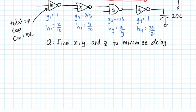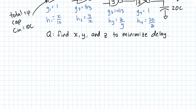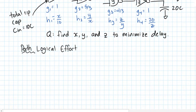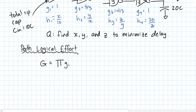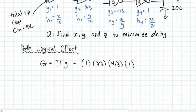To solve this problem we introduce two concepts. First, path logical effort, uppercase G — the total logical effort of the path — is defined as the product of all individual gate logical efforts. We have: 1 × (5/3) × (4/3) × 1, so the path logical effort G equals 20/9.